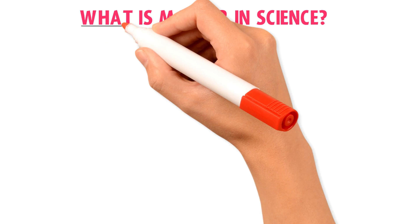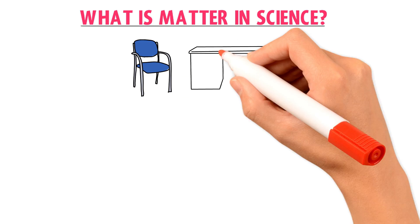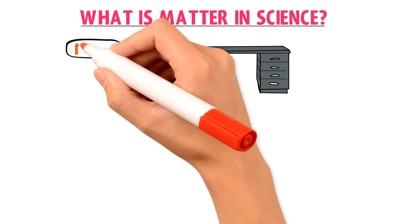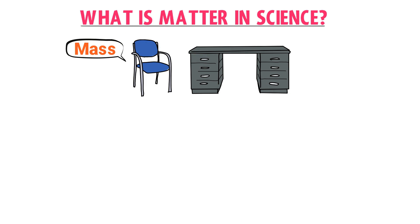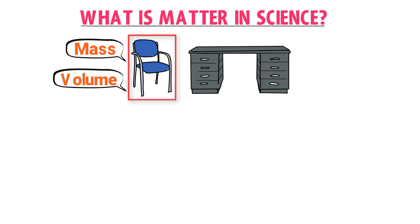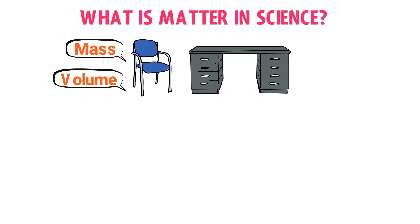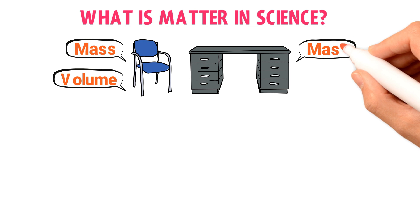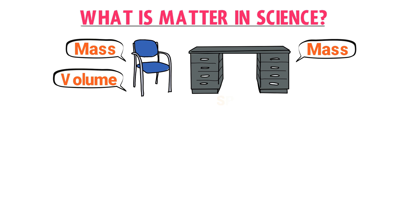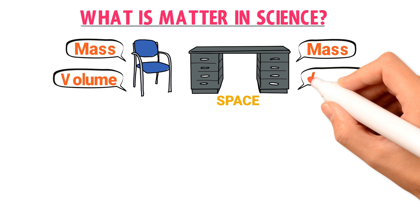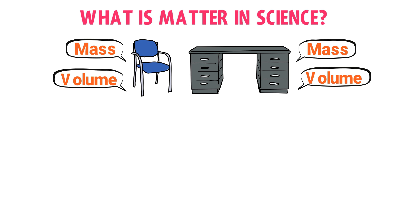Now, what is matter in science? Let's consider a chair and a desk. This chair has some mass and volume — it occupies some space, so it has volume, and it also has some well-known mass. Similarly, this desk has some mass and occupies some space, so it has some volume and mass.